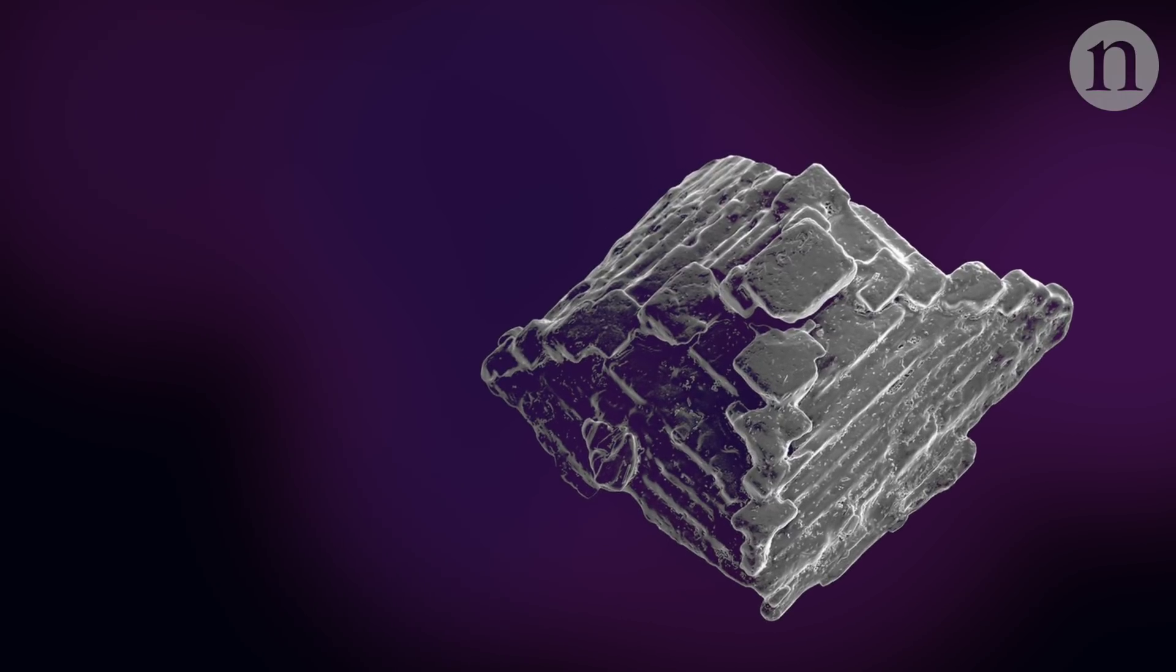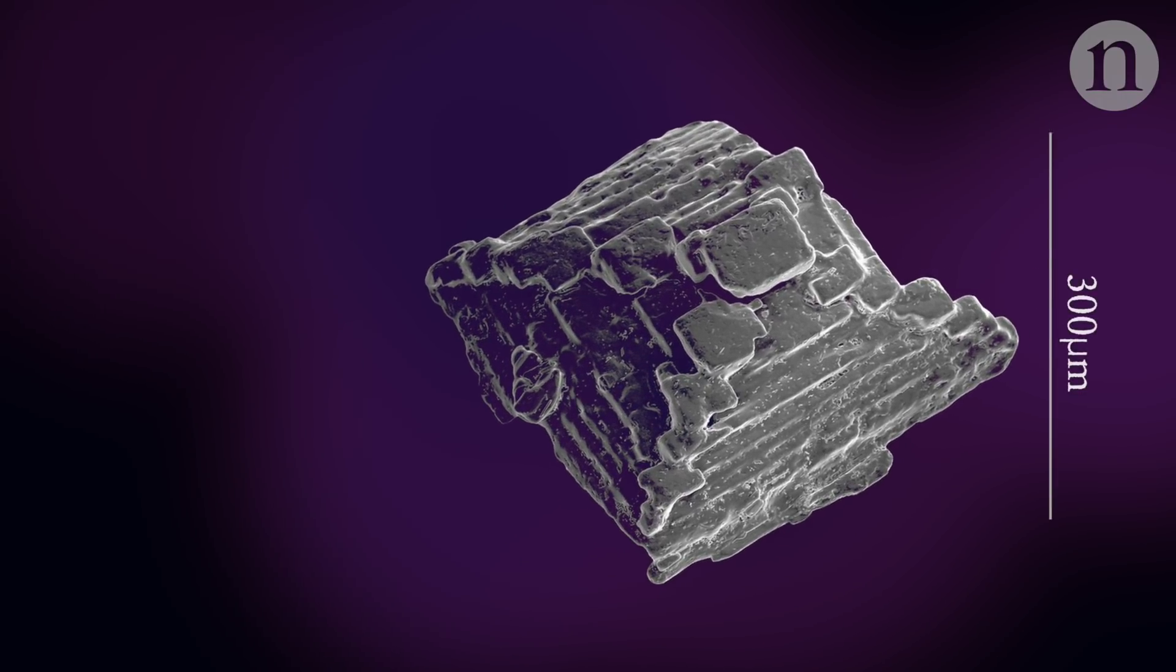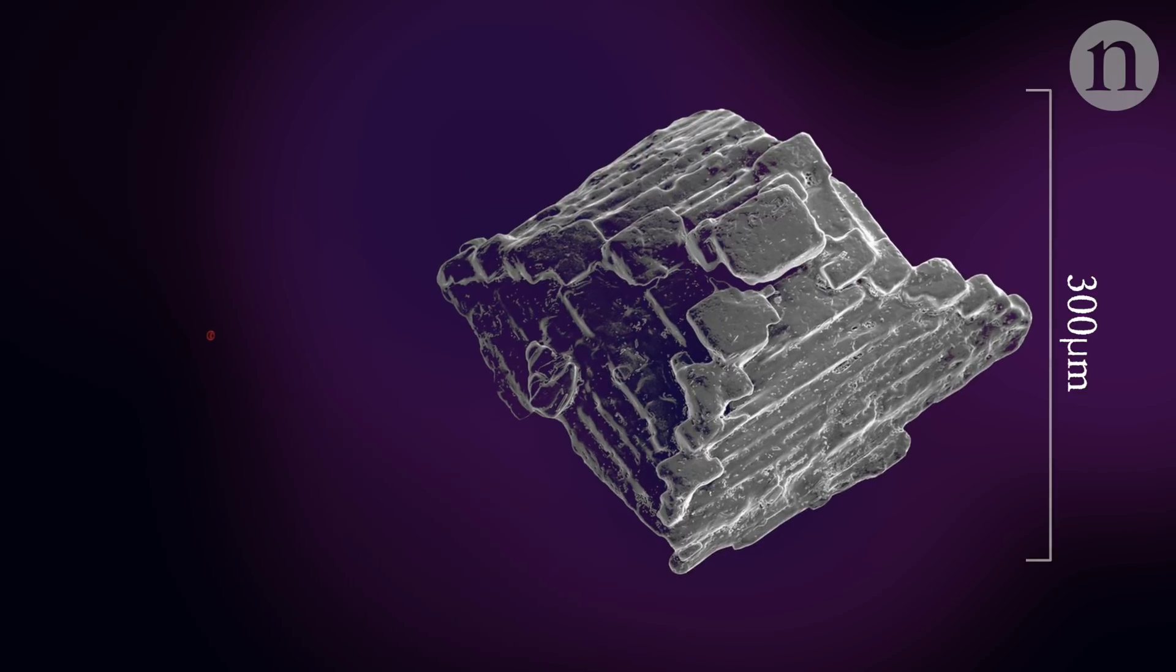To give you a sense of just how small this nano-cage is, let's start with a single grain of salt. It's around 300 microns wide. Compare that to, say, a red blood cell.